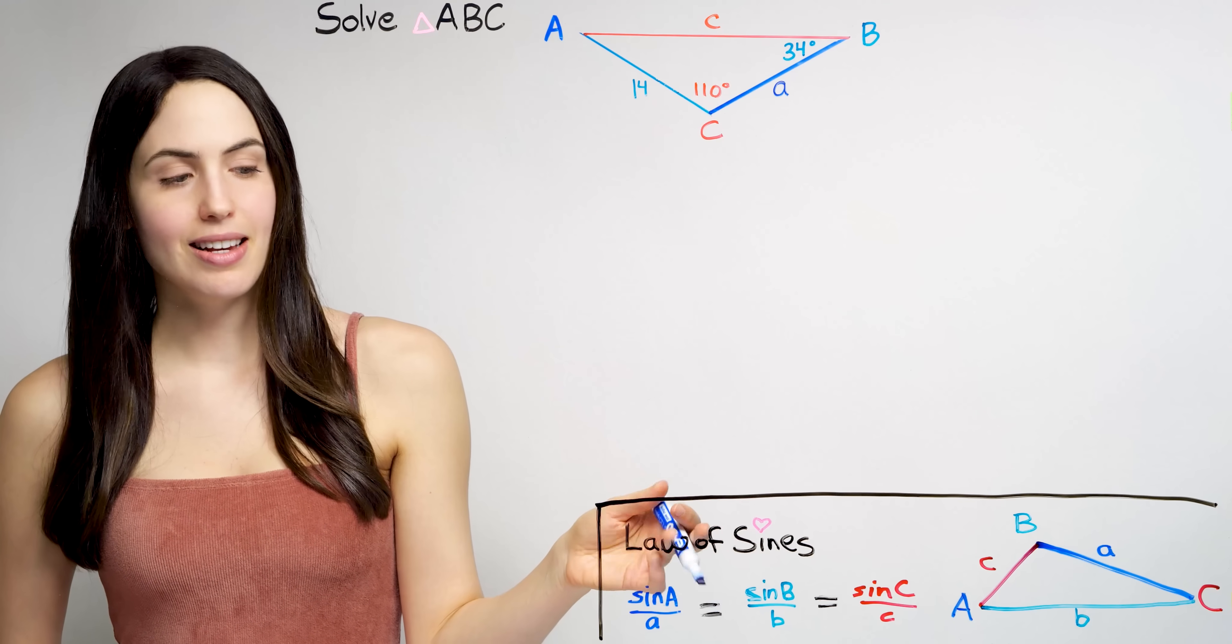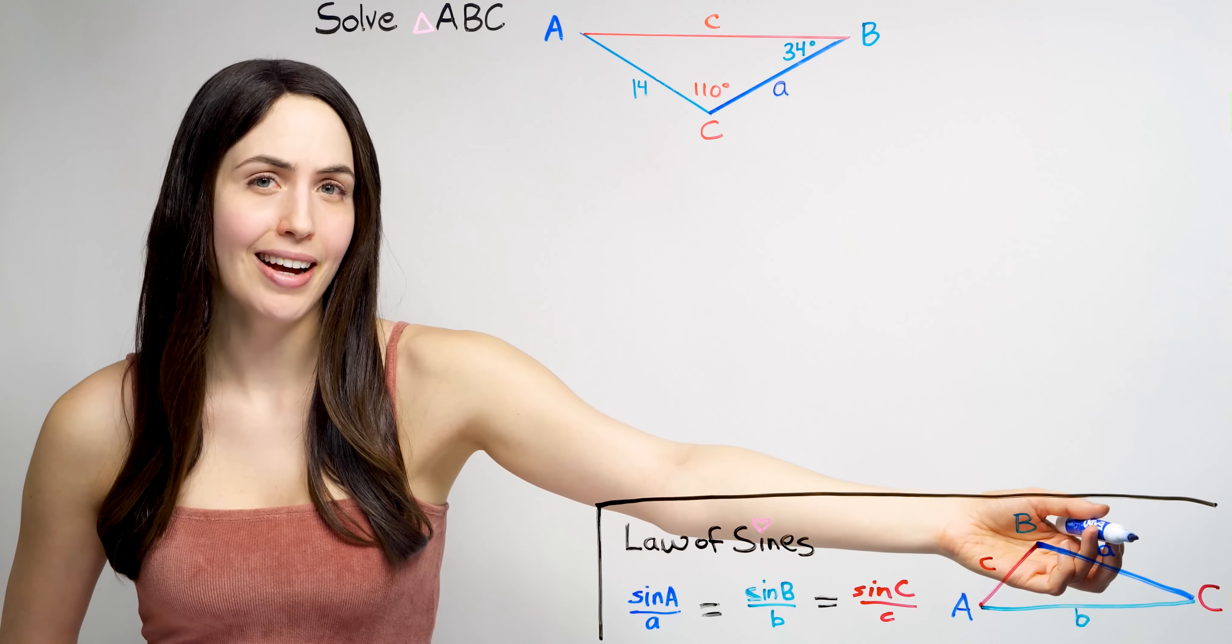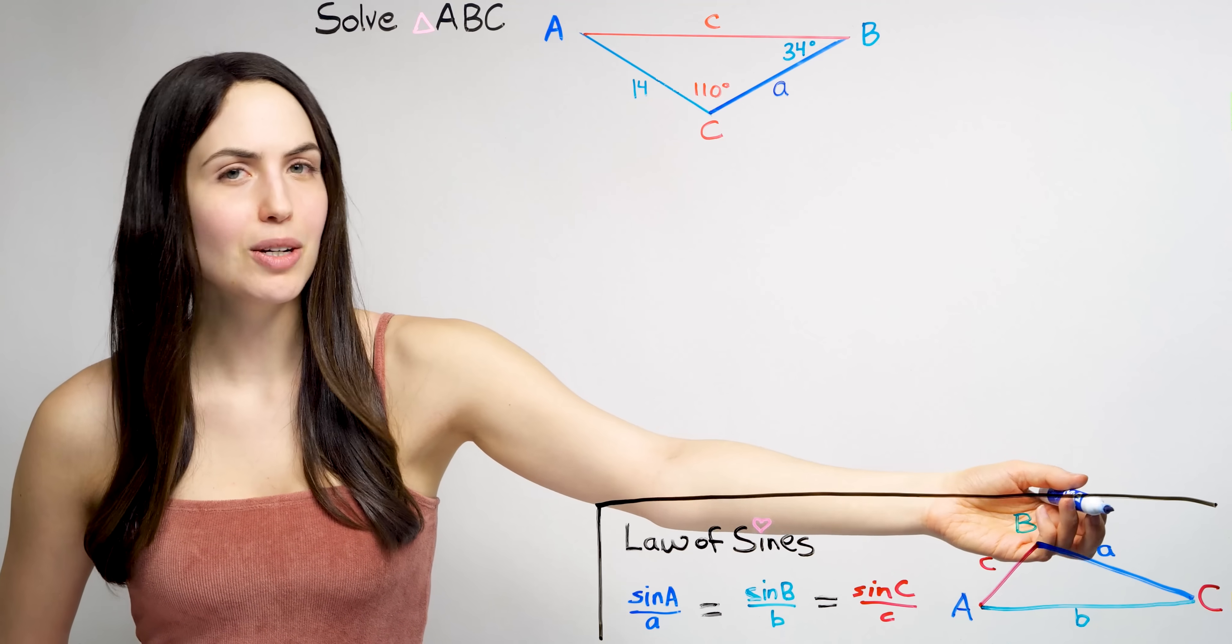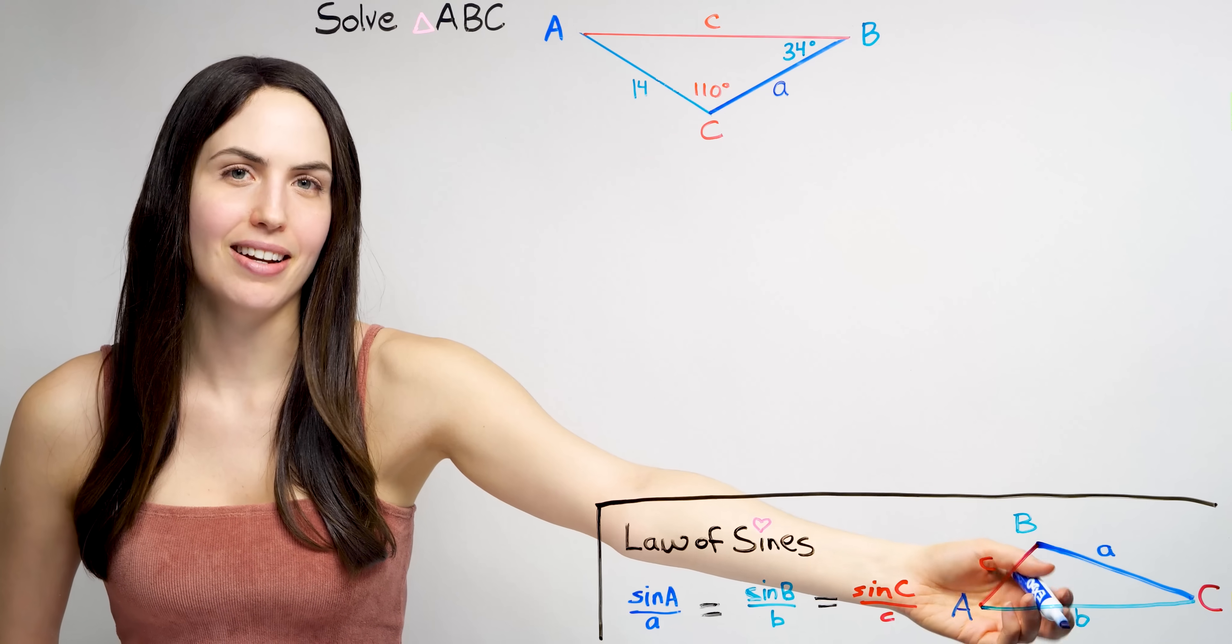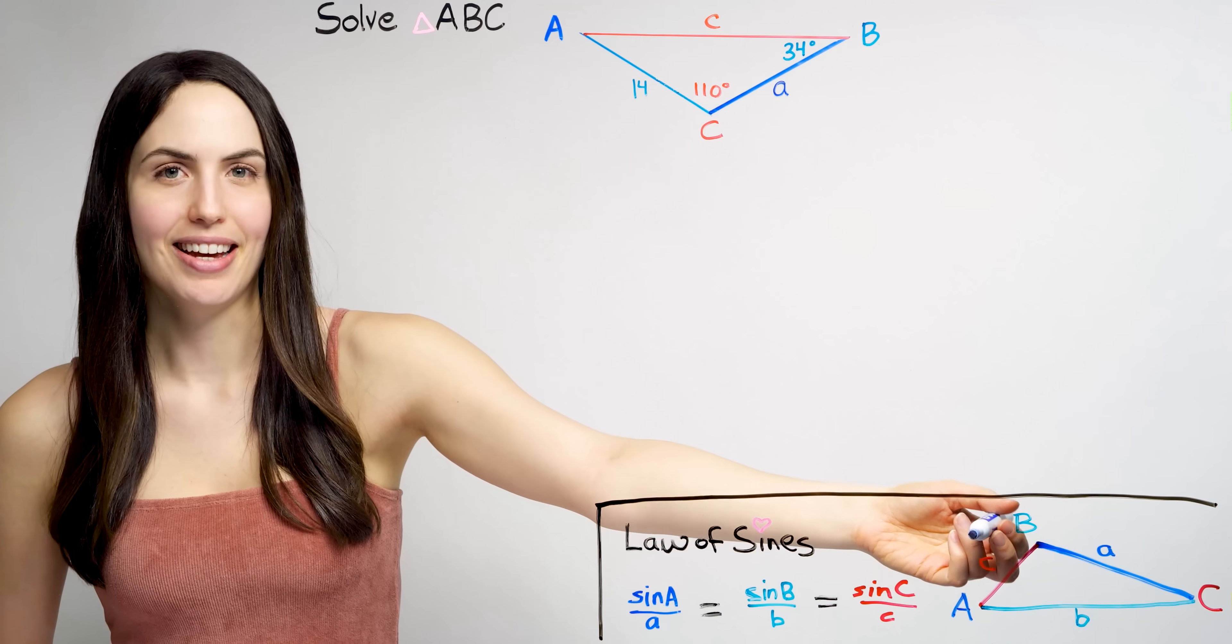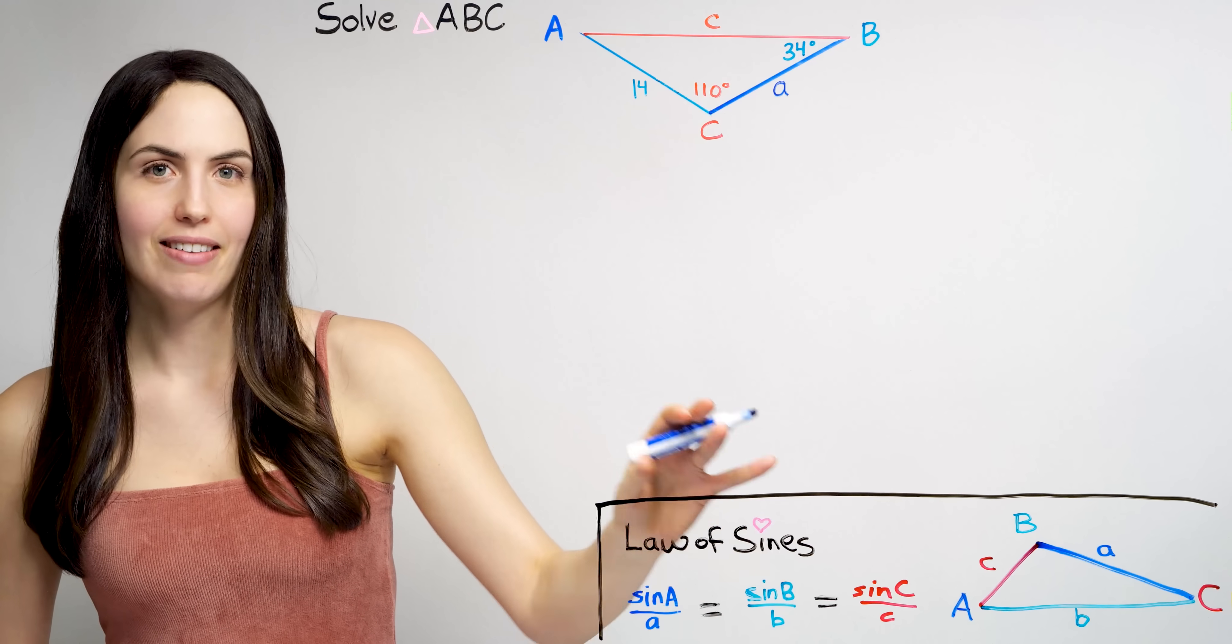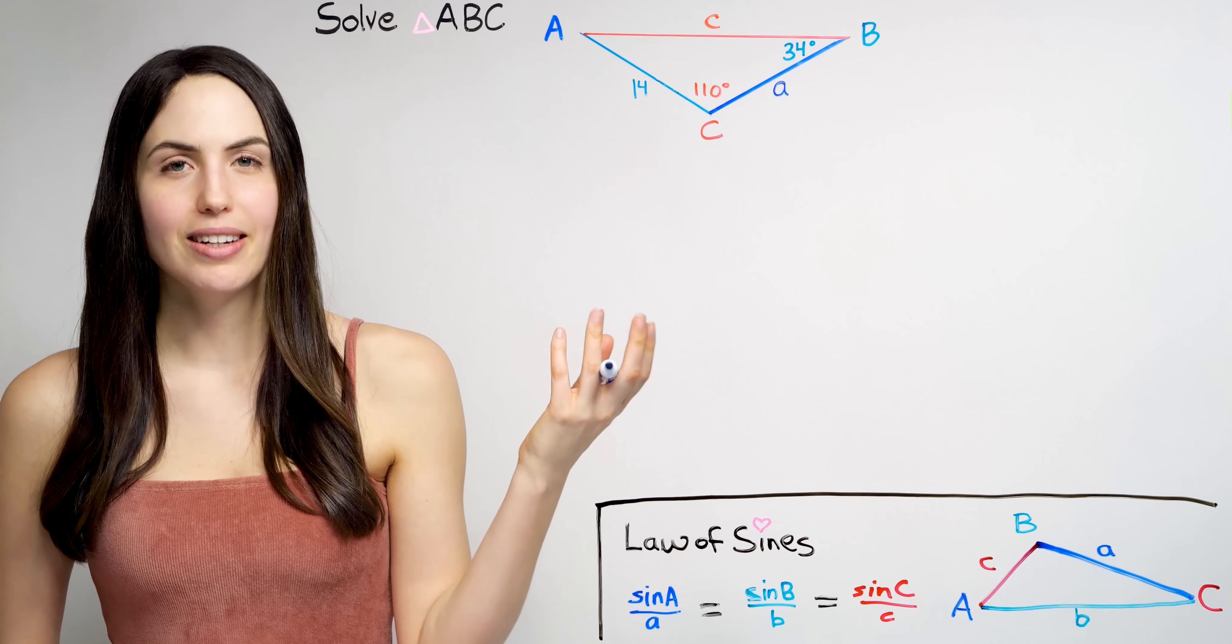And all the law of sines says is that the sine of one angle over the side opposite it equals sine of the next angle over its opposite side equals sine of the last angle over its opposite length. That those ratios all have the same value. So this proportion is true.